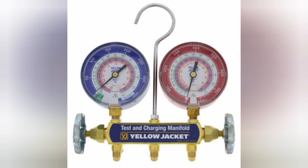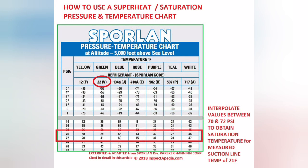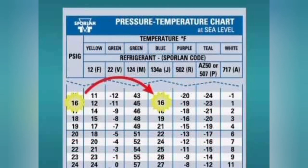To determine the evaporator temperature you would need a pair of pressure gauges. When looking at a pair of pressure gauges, the outer numbers represent pressure and the inner numbers represent temperature. Pressure controls temperature and temperature controls pressure — the hotter the temperature, the higher the pressure; the lower the pressure, the lower the temperature. The different colors on the inner dial — green, pink, and orange — represent the different refrigerants. Even if you don't see your refrigerant on the gauge, as long as you know the pressure you can use a PT chart to convert pressure to temperature.